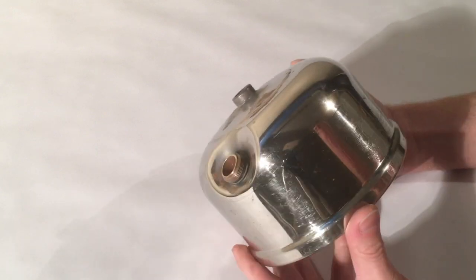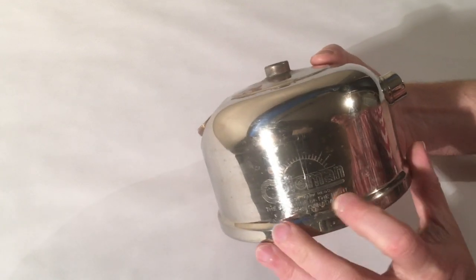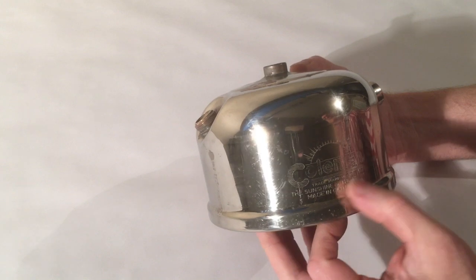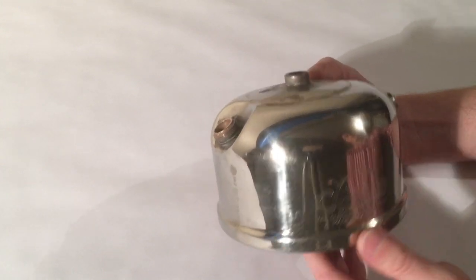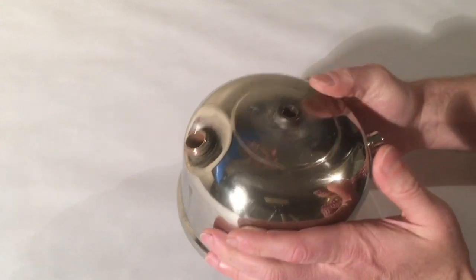So at this point, we're ready to put it on the buffing wheel. It looks pretty good. These pink spots where the brass is exposed, I know not to be too aggressive with those, because the buffing wheel may start to eat through the nickel. But other than that, everything's looking pretty good and I think it'll look great. See you at the buffing wheel.